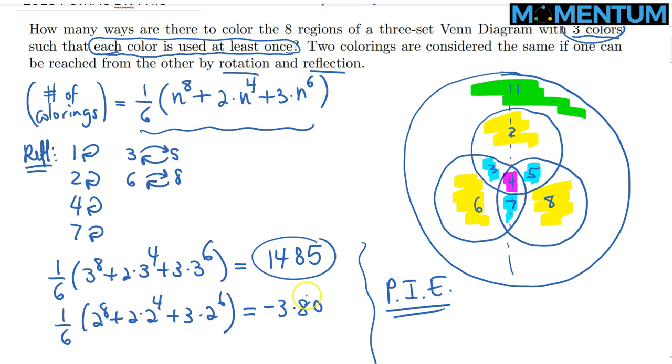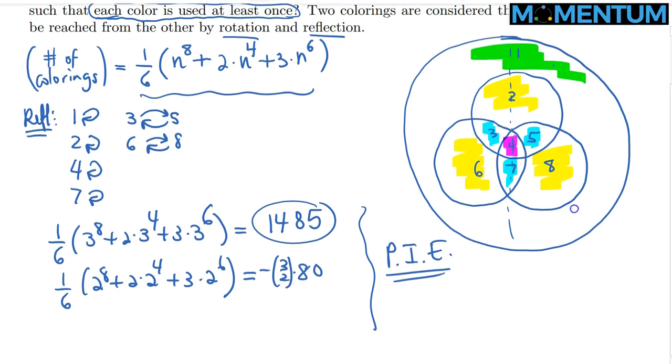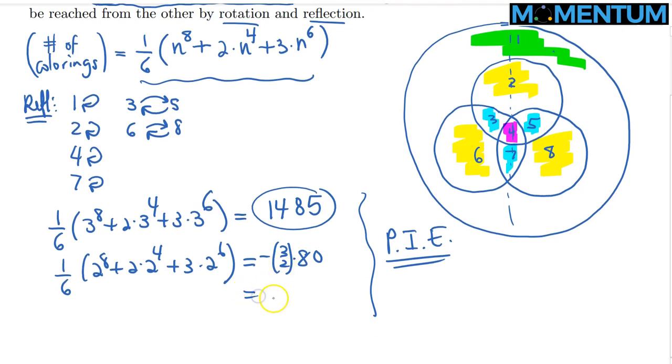But we would rather subtract 3 times 80. And the reason being that we can have colors as, if we have three colors, we can have red and blue missing, or red and white, and blue and white. So, we have three. So, if you will, we can say three choose two. So, which two colors is it that's missing, right? Awesome. So, that's just minus 240. So, therefore, our revised running total would be 1245.